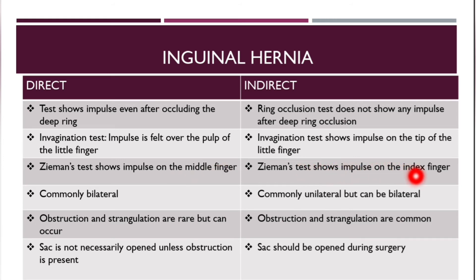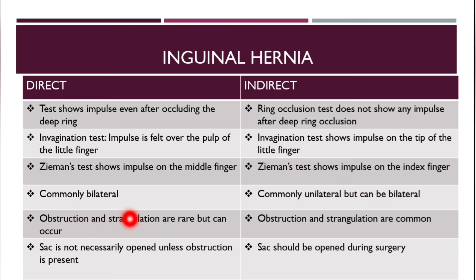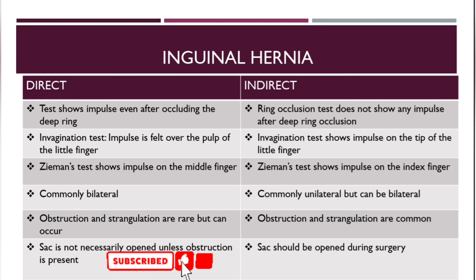Direct hernias are commonly bilateral while indirect hernias are commonly unilateral, though they can be bilateral. Obstruction and strangulation are rare in direct hernias but common in indirect hernia. The sac is not necessarily opened unless obstruction is present in direct hernia, but in indirect hernia the sac should be opened during surgery.